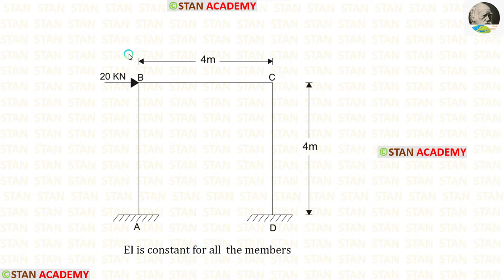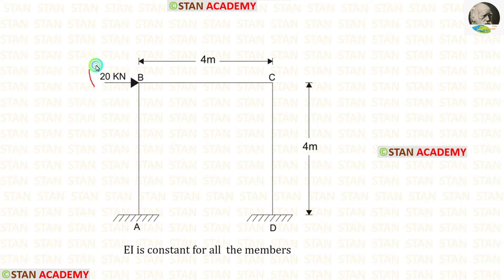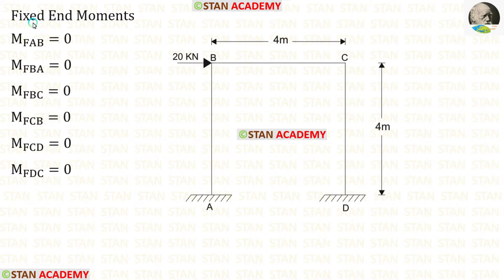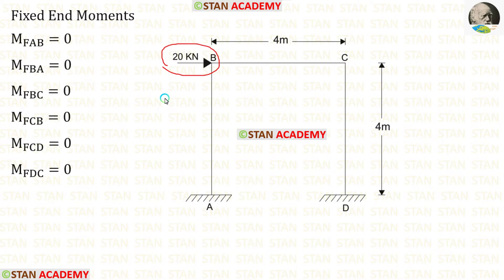This frame is a sway-type frame. Because of this nodal load, there will be sway, occurring in the direction of the load — so the sway occurs towards the right side. Now let us find the fixed end moments. Except for this nodal load, there are no loads in the columns and beam, so all of the fixed end moments will be zero.